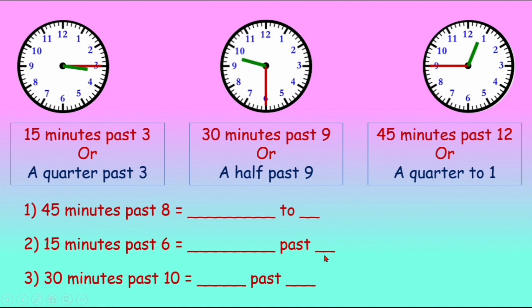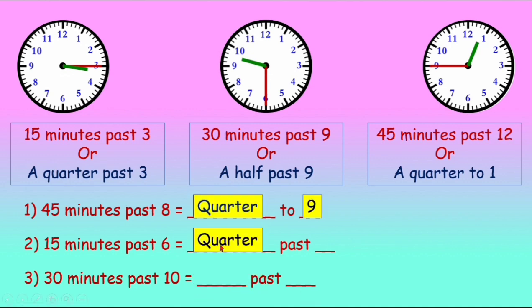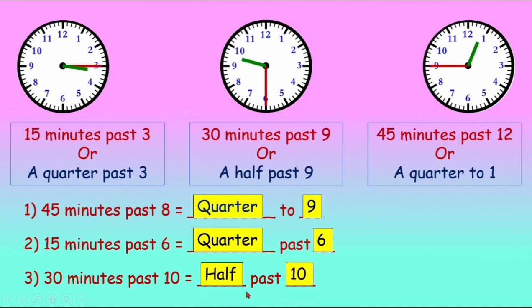45 minutes past 8 means a quarter to 9. 15 minutes past 6 will be a quarter past 6. 30 minutes past 10 will be half past 10.